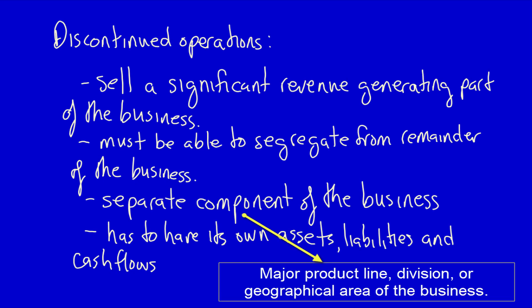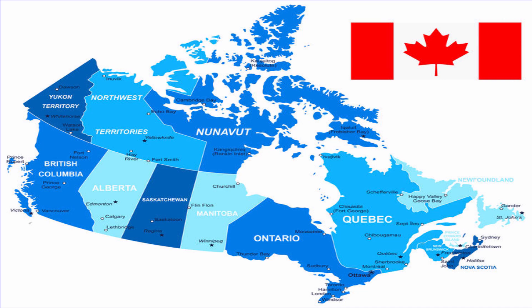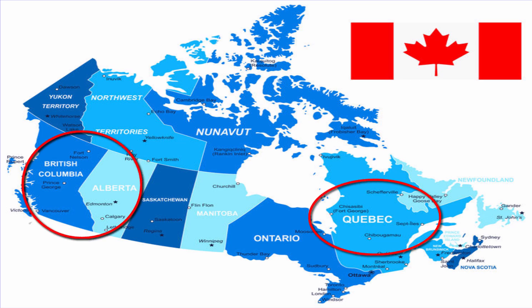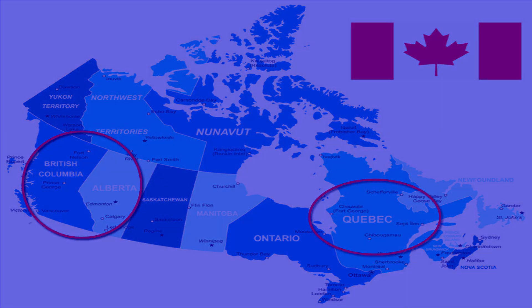What does geographical area mean? Imagine that you are running retail stores Canada-wide and you decide to get rid of all the retail stores in, say, Quebec, or all the retail stores in the western provinces. This would be considered discontinued operations because it is a separate geographical area, and all the retail stores in that separate geographical area would have their own assets, liabilities, and cash flows.